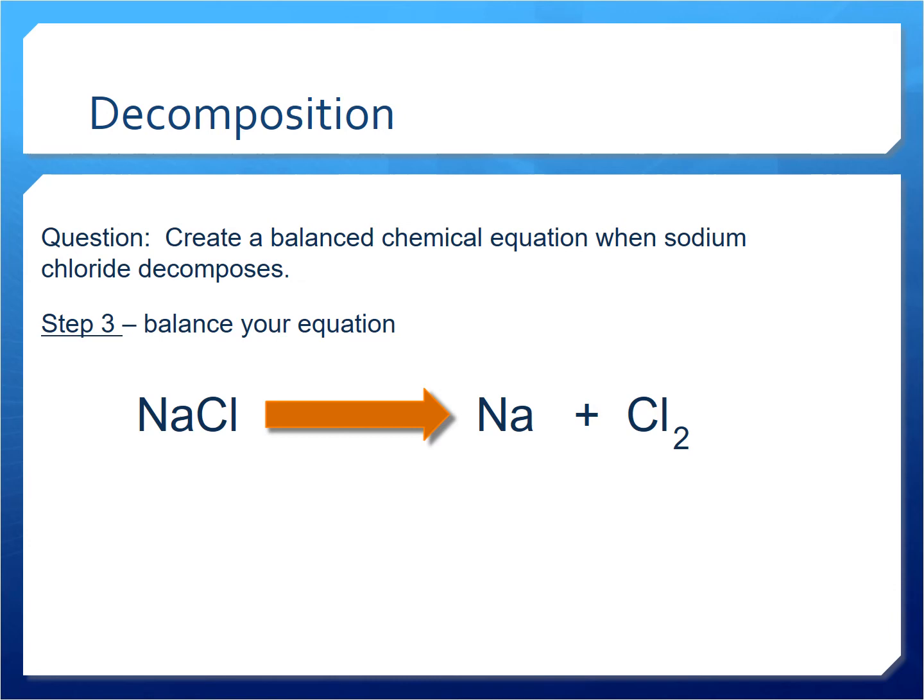Step three, we'll balance our equation. Now we have two chlorines on this side and only one on the left side, so we'll put a two in front, and then that gives us two sodiums on the left, and now we have two on the right.